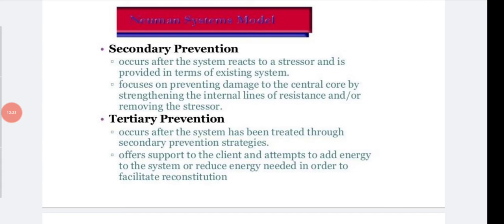Tertiary prevention occurs after the system has been treated through secondary prevention strategies. It offers support to the client and attempts to add energy to the system or reduce energy needed in order to facilitate reconstitution — essentially rehabilitation and coping after treatment of stressors.